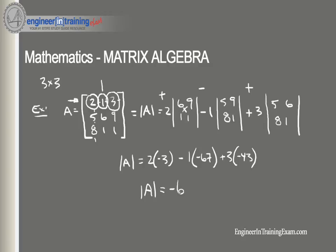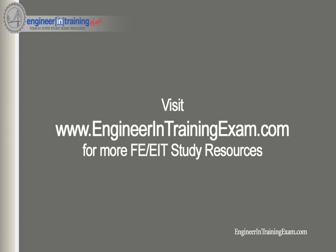So that's essentially it. You just take that three by three matrix, break it down into a series of two by two matrices multiplied by a scalar, and you should be all good to go. It's a basic process—if you do this a couple times it'll pretty much become automatic.